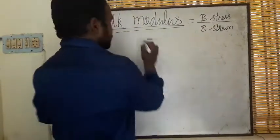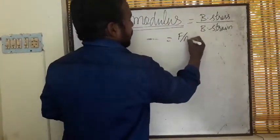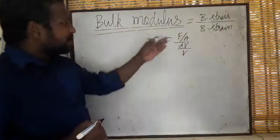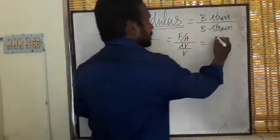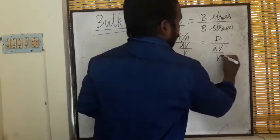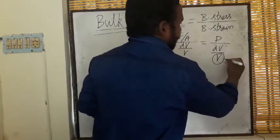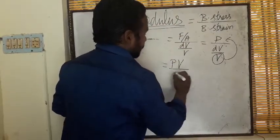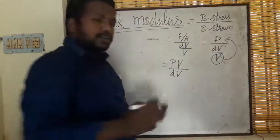Bulk stress is force per unit area. Strain is the change in volume by original volume. So as we know, force per unit area we can take it as pressure. Change in volume by original volume - this volume denominator is taken as numerator, so pressure times volume by change in volume.